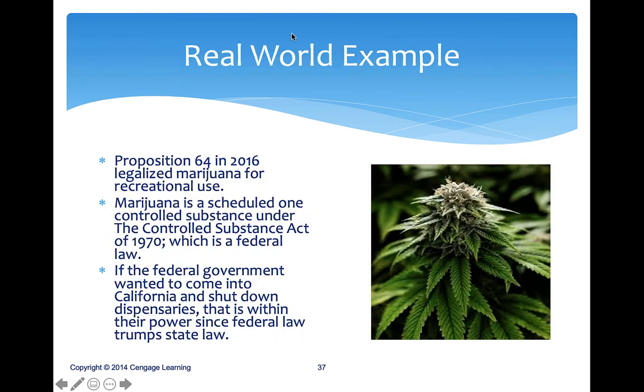But if a federal law and a state law conflict, federal law will trump state law. This is due to the supremacy clause in the Constitution — Article 6, Paragraph 2 — meaning the Constitution and federal law take precedent over state laws and even state constitutions. For a real-world example, Prop 64 in 2016 legalized marijuana or cannabis for recreational use in California.